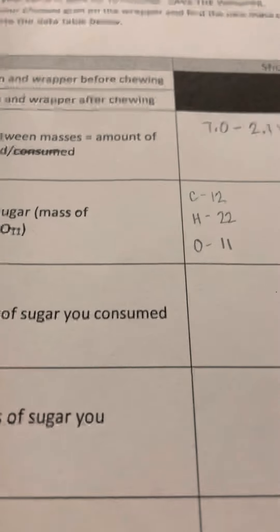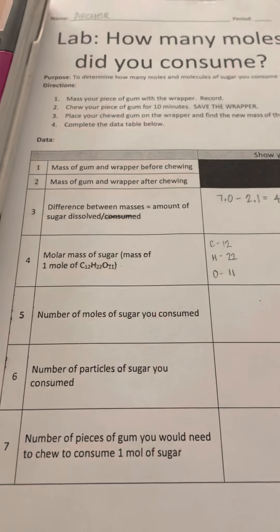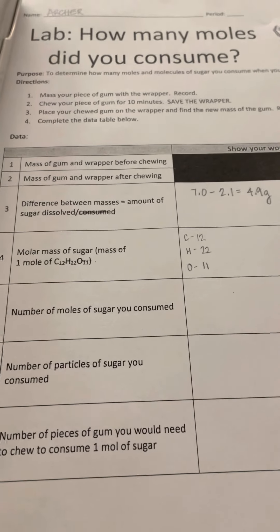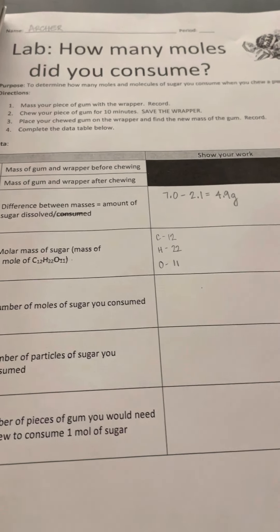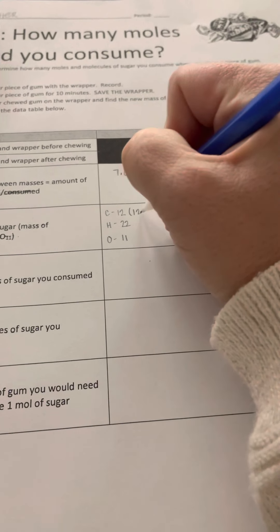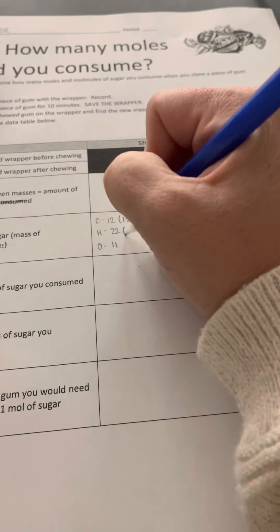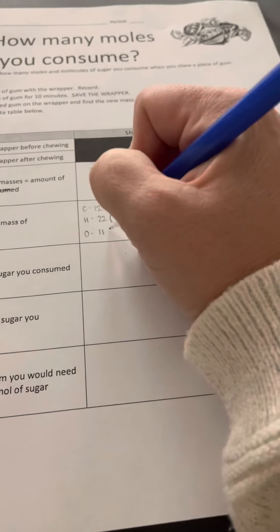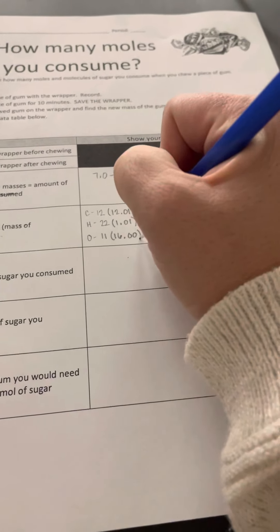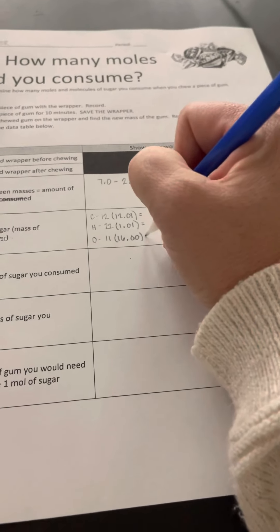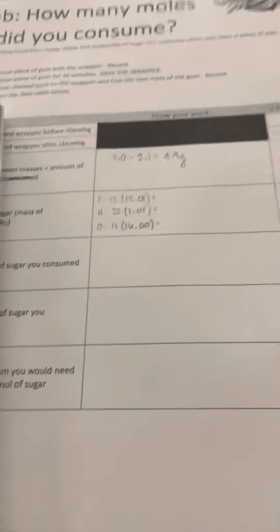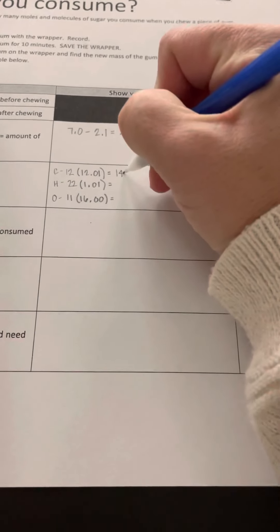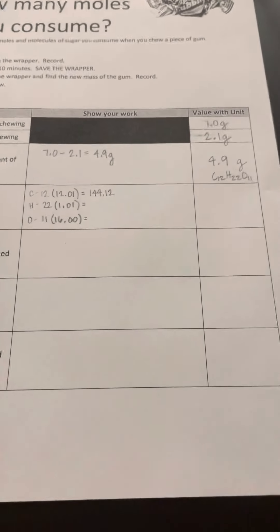So now I'm going to come back and finish getting my molar mass, which we talked about yesterday. Molar mass is the mass of every single atom in the compound. I've got 12 carbons, 22 hydrogens, and 11 oxygens. Carbon's mass on the periodic table is 12.01. Hydrogen's mass is 1.01. Oxygen's mass is 16.00. So when I multiply those by how many atoms I have: 12 times 12.01 is 144.12, and 22 times 1.01 is 22.22.